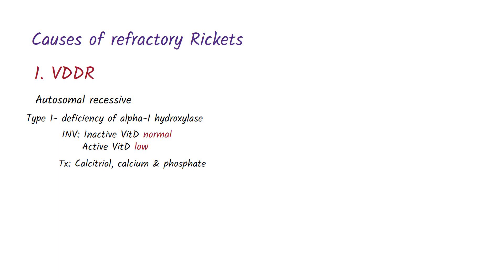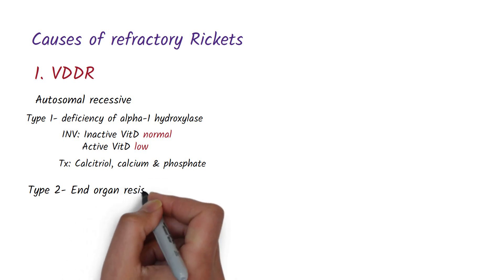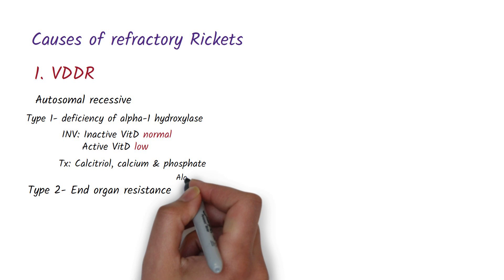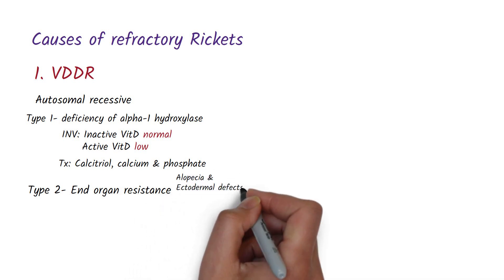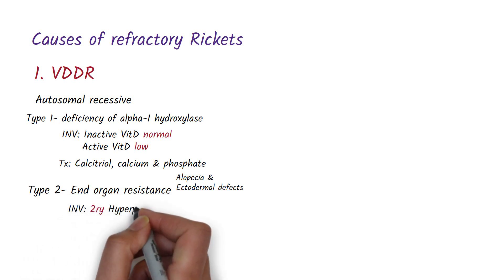Now let's move on to type 2 vitamin D dependent rickets. Type 2 vitamin D dependent rickets is due to an end organ resistance to the active form of vitamin D. So when vitamin D binds with receptors, it will not be able to produce its function. So these babies usually present early with features of rickets and they also have a high chance of alopecia and ectodermal defects as well. In vitamin D dependent rickets type 2, the increase in parathyroid hormone is a secondary hyperparathyroidism.